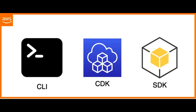In conclusion, each of these AWS tools — AWS CLI, SDKs, and CDK — have their own unique features and benefits. AWS CLI is a command-line interface for performing actions from the command line, similar to the AWS Management Console. AWS SDKs are available for languages including Java, Python, and .NET, providing a programmatic way to interact with AWS services. AWS CDK is a framework for defining and deploying cloud infrastructure as code using familiar programming languages.